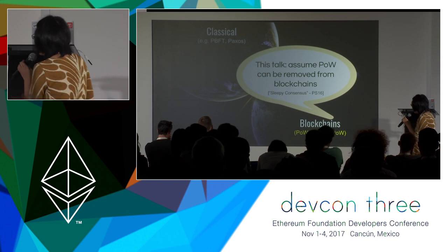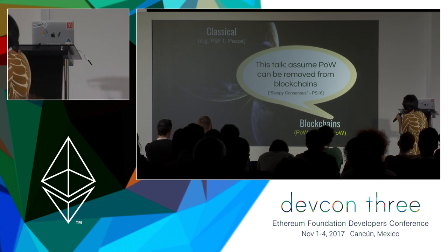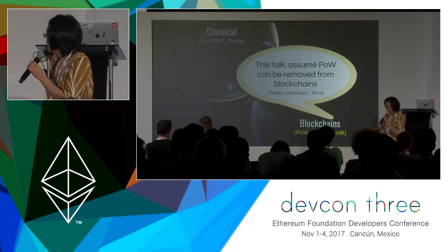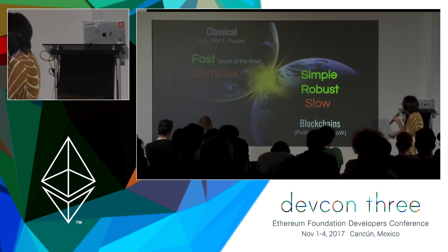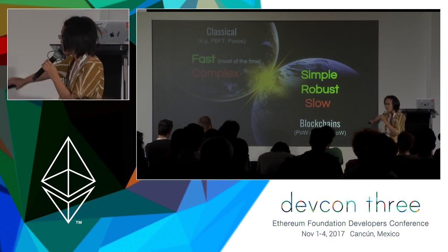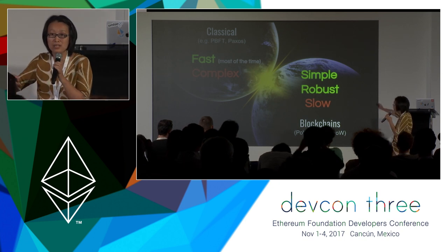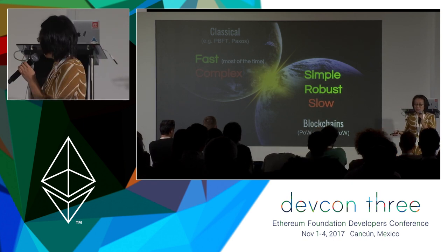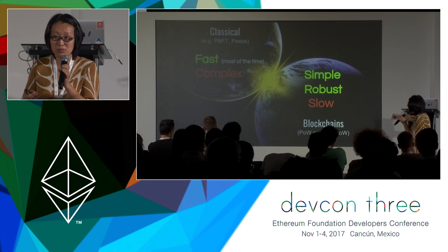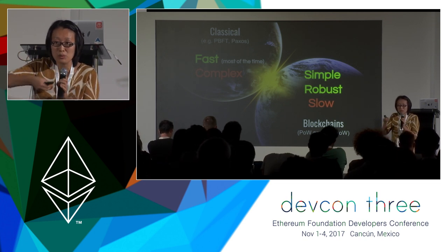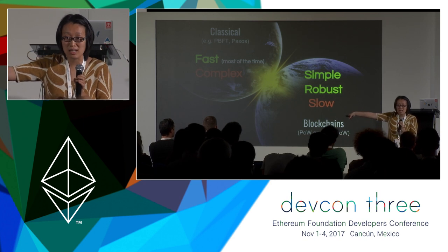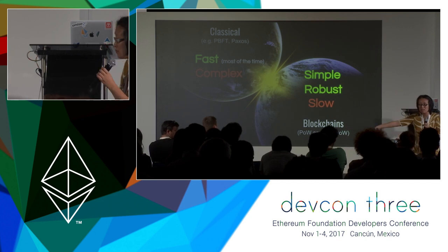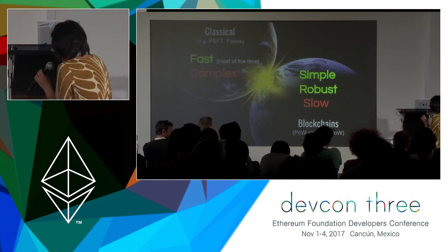Whenever I mention blockchains in the rest of the talk, it can be either proof-of-work based or non-proof-of-work based. In comparison with classical consensus, blockchains have many advantages — they are very robust, their robustness has been empirically proven. Bitcoin is often referred to as the honey badger of money. The protocols are very simple: everyone picks the longest chain and tries to extend it — that's it. Simplicity in a large-scale distributed system can often be your friend.